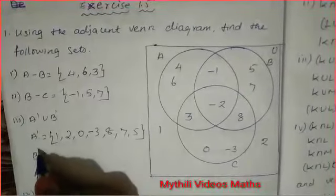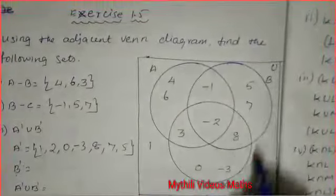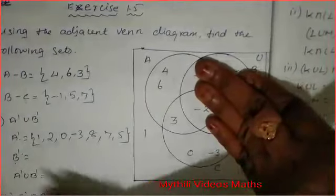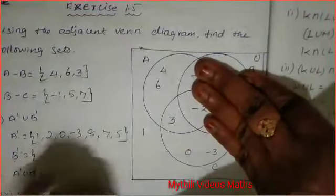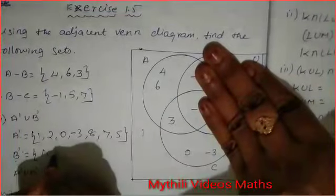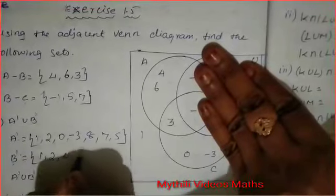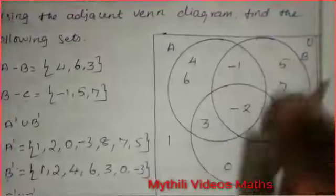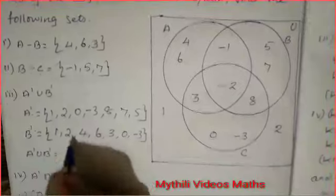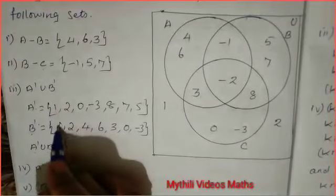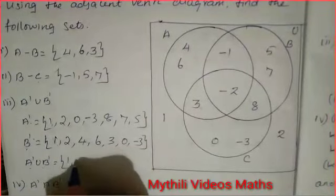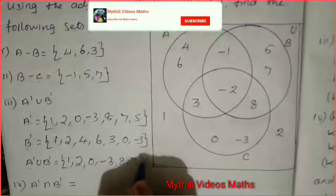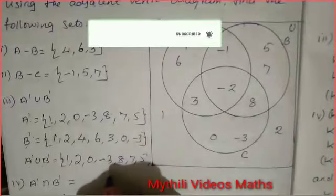Now find B'. B' means from the universal set, subtract the full B set. B' = {1, 2, 4, 6, 3, 0, -3}. Now for A' union B', we combine both. Union means combine, and if any number is repeated we write it only once. So: 1, 2, 0, -3, 8, 7, 5, 4, 6.